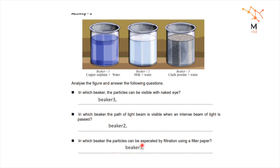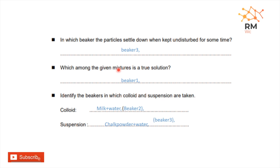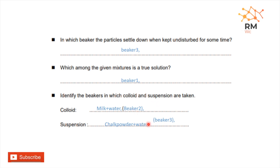In which beaker can particles be separated by filtration? If you use filter paper, we will separate the particles. The particles settle in beaker 3. The true solution is beaker 1. Colloid is beaker 2 and suspension is beaker 3. Beaker 2 is milk plus water and beaker 3 is chalk powder.